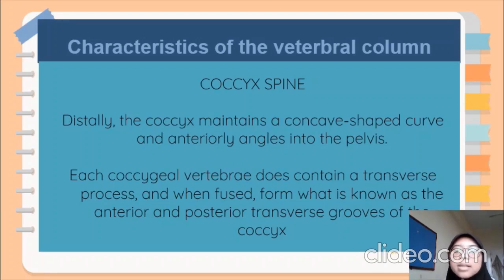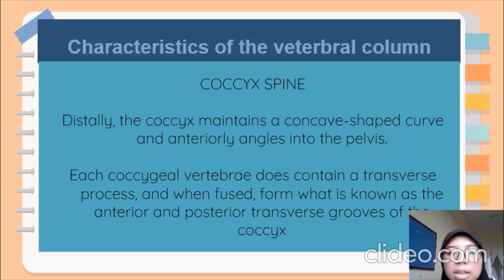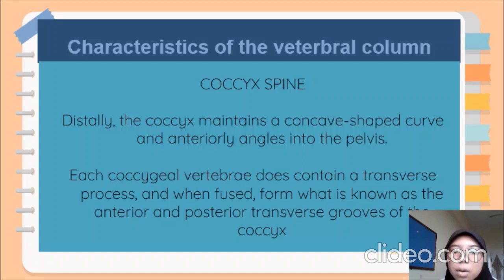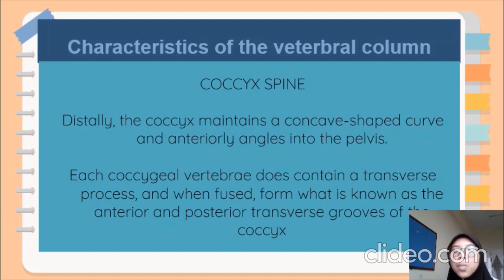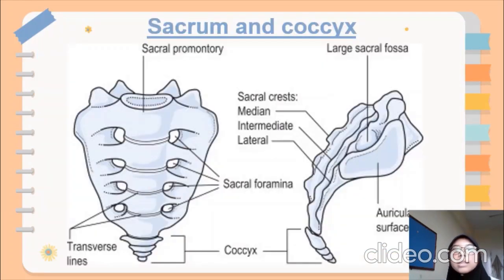The coccyx is the most distal portion of the vertebral column. The coccyx maintains a concave shape and curves anteriorly into the pelvis. Each coccyx vertebra contains a transverse process, and when fused they form the anterior and posterior transverse grooves of the coccyx. The most superior segment is the largest and broadest of the four sections, with two small lateral transverse processes. The distal pointed tip is termed the apex, and the superior border is termed the base. This is the diagram of the sacrum.